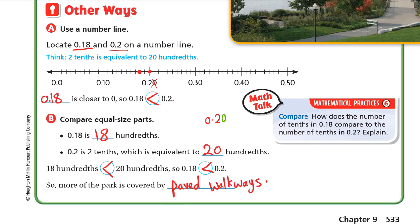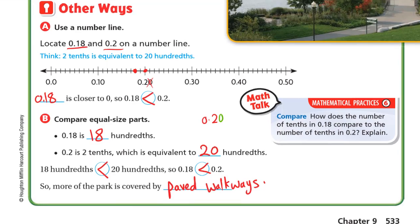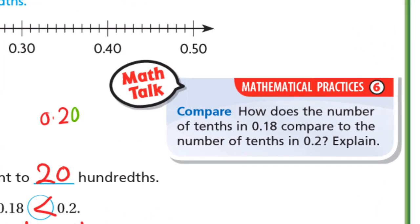Math talk: how does the number of tenths in 0.18 compare to the number of tenths in 0.2? In 0.18, the number of tenths is 1. In 0.2, the number of tenths is 2. So here we have 2 tenths and here we have only 1 tenth, so 0.2 will be bigger.